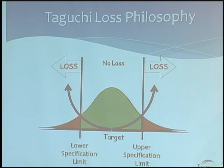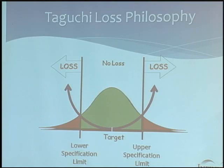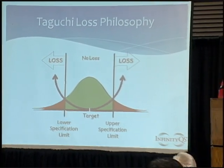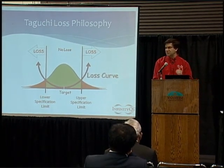Depending on the type of test you're measuring, that loss function curve could be different. You can figure out what the best guess of the loss function curve is in your situation, make an equation out of that, and apply it to your number. So as you get a value that falls a little off target, you apply this equation curve to get the cost associated with it. If we assume that as soon as it hits the upper or lower spec limit it's a $17.25 loss, in this example I'm drawing a straight linear line from the target of zero up to $17.25.